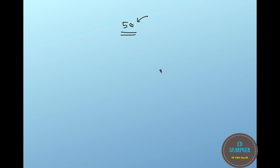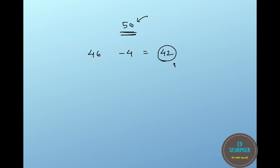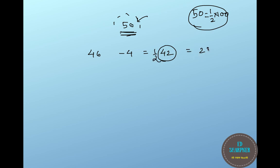Now let's use a secondary base, say 50. Let's square 46. The base is 50 and 46 is less by 4. Combine 46 minus 4 to get 42. Now since 50 is half of the primary base 100, you halve 42 to get 21. Then put the square of 4, which is 16, after 21. So 2116 is the square of 46.